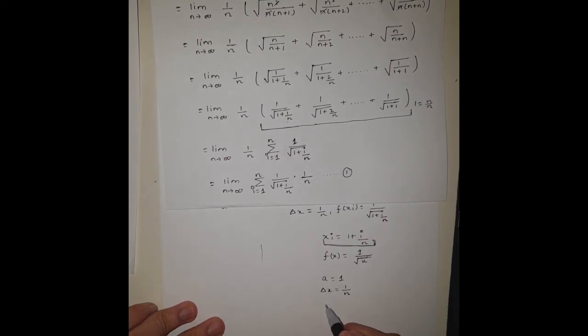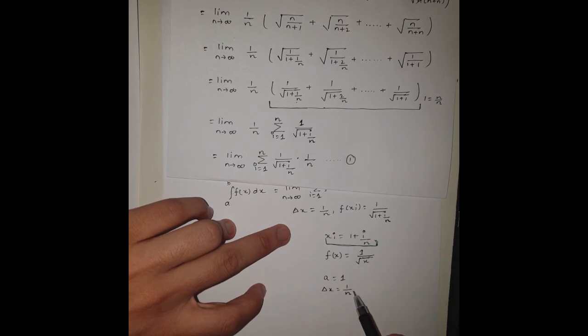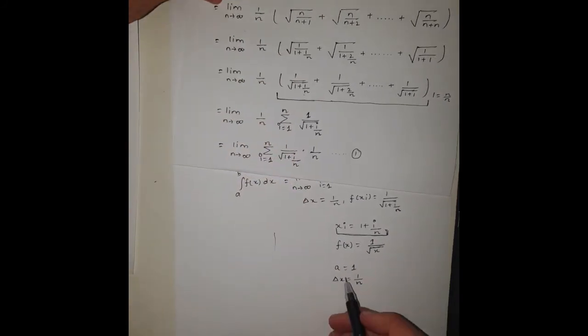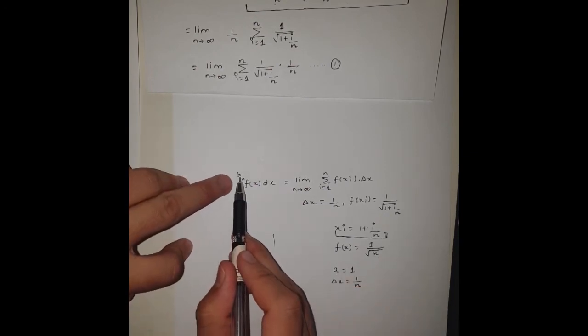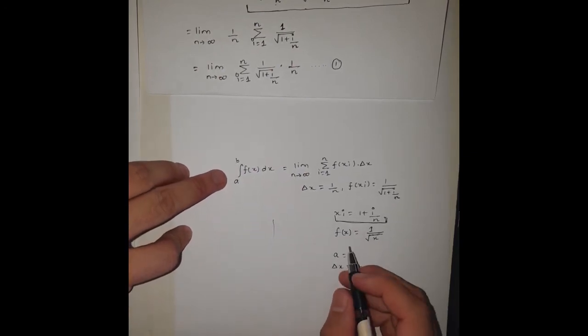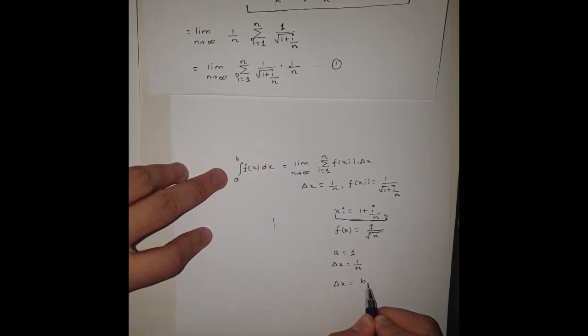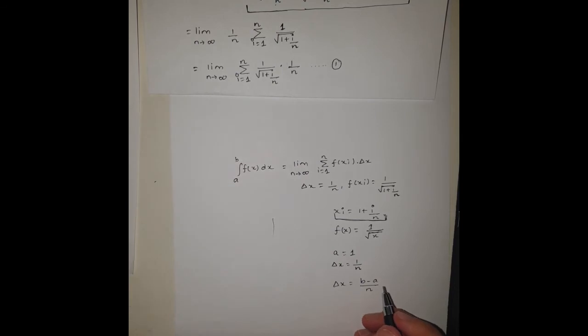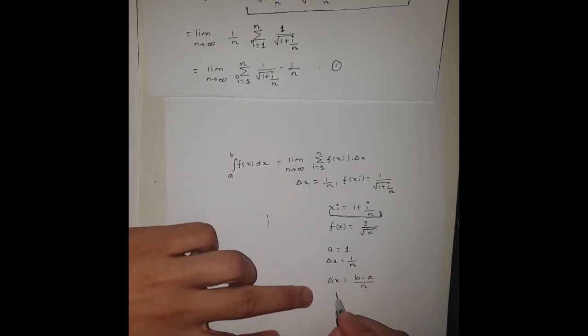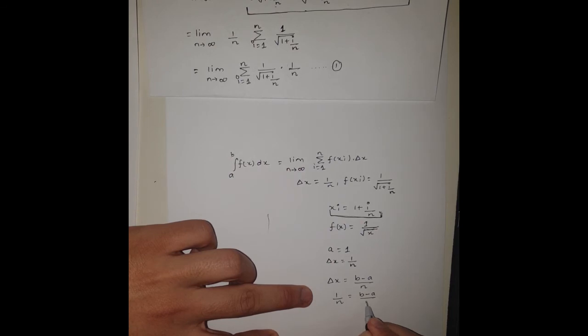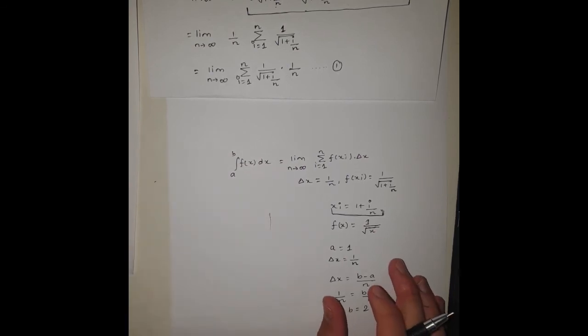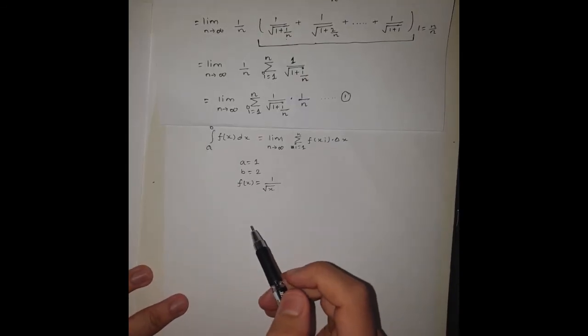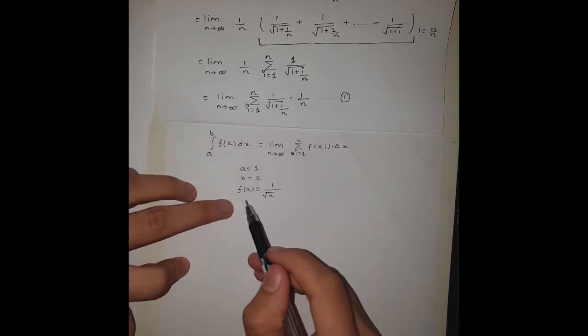We have the function and now we need the upper limit b. How can we get the upper limit b? We know that delta x was defined as (b minus a)/n, and delta x equals 1/n equals (b minus a)/n. From here we can see that b is going to be 2. Now these are the things that we have found: we have the a, we have the b, and we have the function itself.